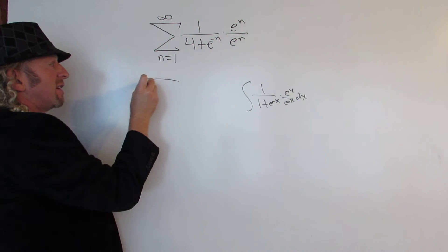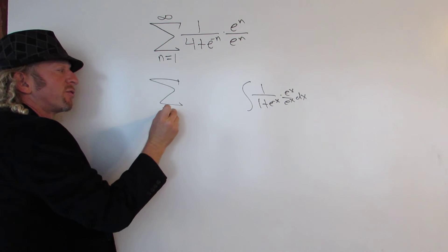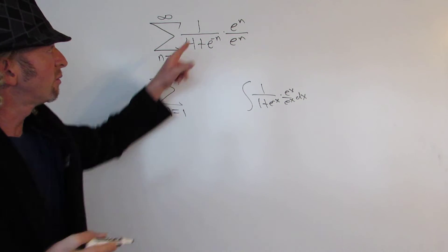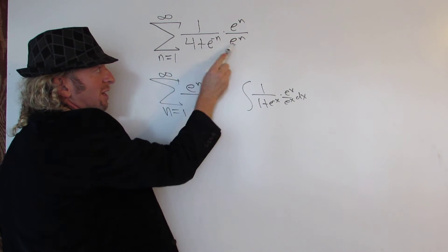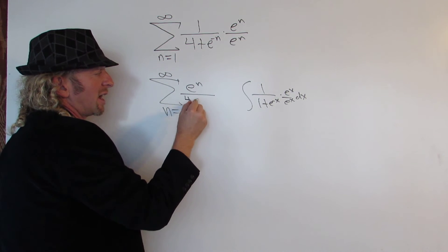So we can write this as the infinite sum as n runs from 1 to infinity. Then 1 times e to the n is e to the n, so we have e to the n. On the bottom we have 4 times e to the n, which is 4 e to the n.